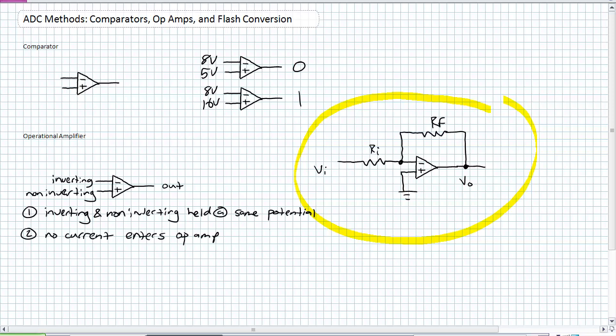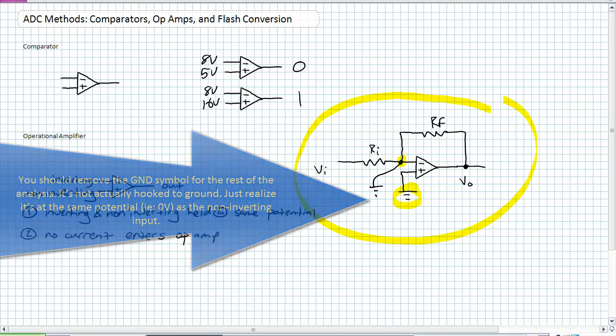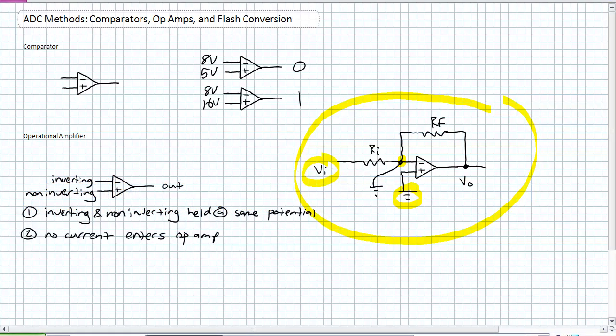Consider this diagram over here. Look at the non-inverting input. It's being tied to ground. So by property one, the inverting and non-inverting inputs are held at the same potential. What is this input being held at? The answer is ground. So that's known as a virtual ground. There's an input voltage over here being applied to one end of the resistor RI, and the other end of RI is being held to ground because of property one.